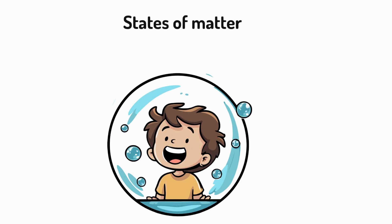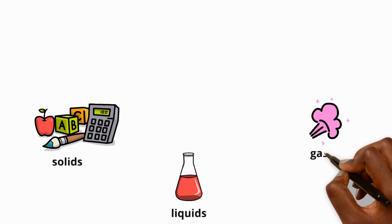Everything around us is made of stuff called matter. This matter can be in different forms or states: solid, liquid, or gas.